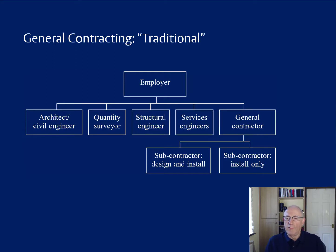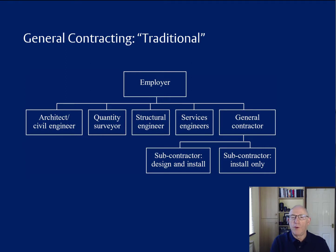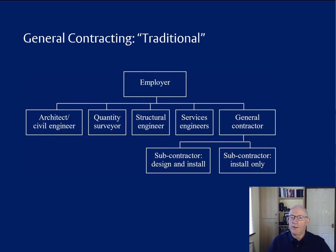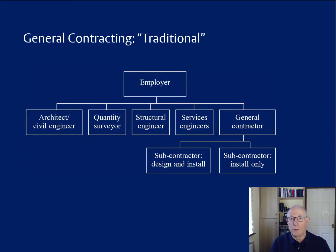The general contractor is responsible for the construction work and tends to subcontract all of the work to specialists. This is because it's impossible to keep all of the trades busy from one project to another — the proportion of different kinds of work differs across projects. For the sake of efficiency and competitiveness, general contractors subcontract to specialist subcontractors who can switch between different general contractors in order to keep their resources permanently busy as far as possible.